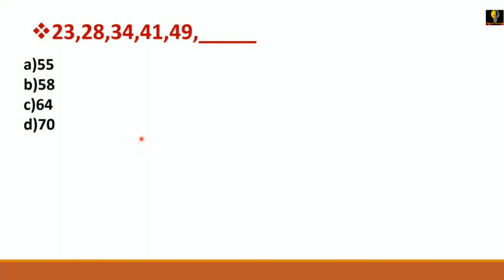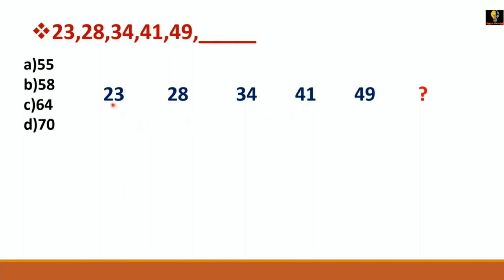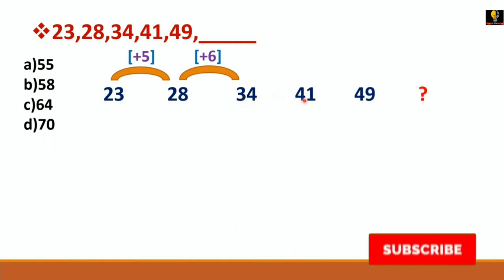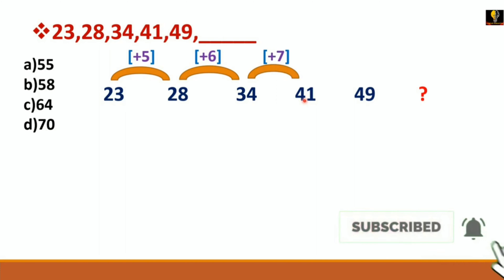To solve this problem, first write the series: 23, 28, 34, 41, 49, and your next number. Observe that it has an incremental form. Find the differences: 28 minus 23 gives addition of 5; 28 to 34 gives addition of 6; 34 to 41 gives addition of 7.